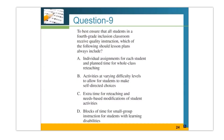Question number nine: To best ensure all students in a fourth grade inclusion classroom receive quality instruction, which should lesson plans always include? A) Individual assignments and planned time for whole-class reteaching; B) activities at varying difficulty levels for self-directed choices; C) extra time for reteaching and needs-based modifications of student activities; or D) blocks of time for small group instruction for students with learning disabilities. We need to adapt instruction to student needs. The correct answer is C.